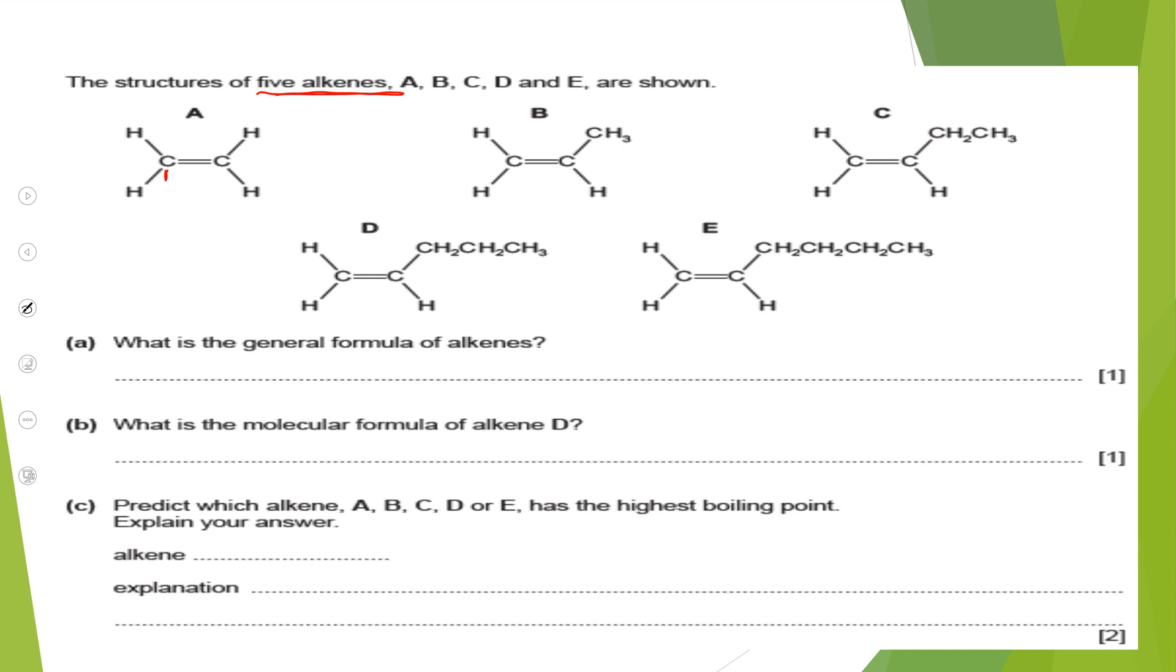The first one has two carbon atoms, therefore that is ethene. That is the simplest alkene, actually. The second alkene has three carbon atoms. We can name that as propene. Number three, we have four carbon atoms right here, and that is butene. This has five carbon atoms, it is pentene. The last one, six carbon atoms, and that is hexene.